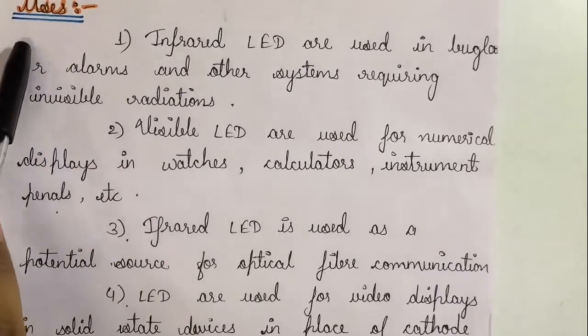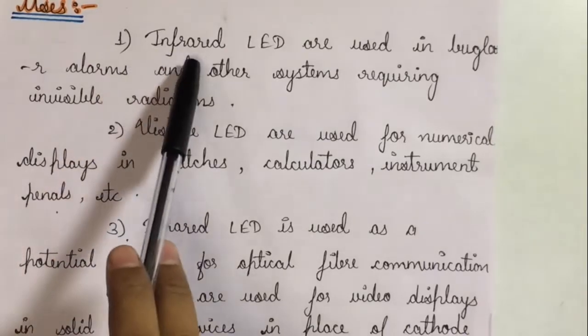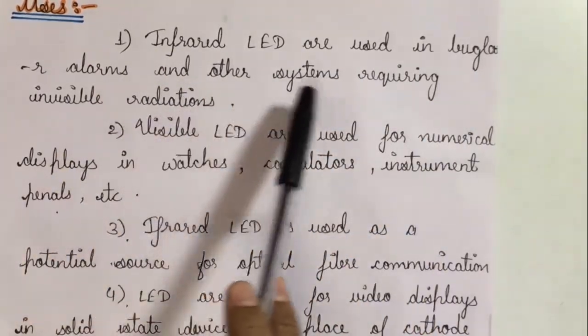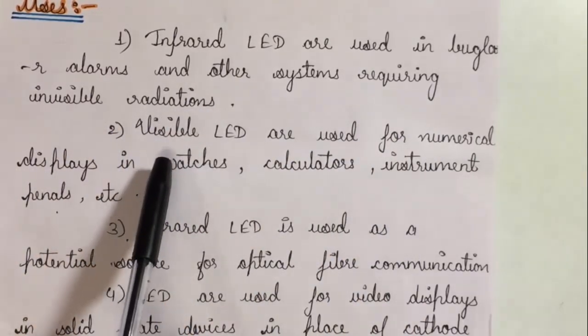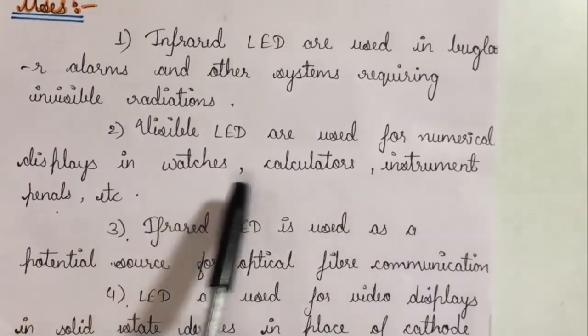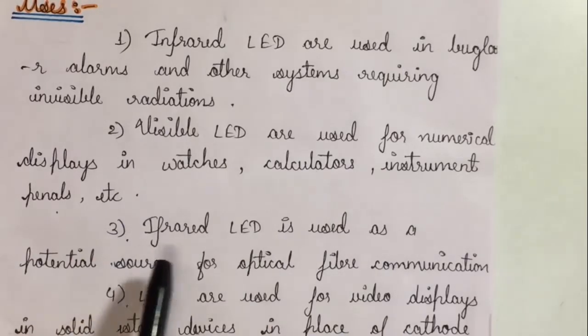The next part of our question is uses of LED. First, infrared LEDs are used in burglar alarms and other systems requiring invisible radiation. Second, visible LEDs are used for numerical displays in watches, calculators, instrument panels, etc. Third, infrared LED is used as a potential source for optical fiber communication.